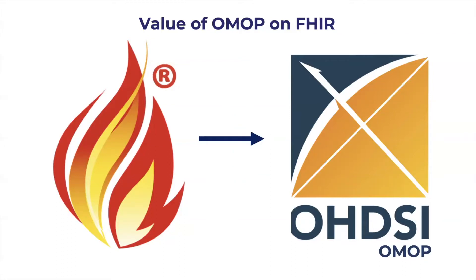Moving data between FHIR and OMOP allows users to translate data from provider and patient applications into structured data repositories. It also allows users to transform individual patient data into a form receptive to scoring by OMOP predictive models. Moving data between OMOP and FHIR allows users to turn a clinical data warehouse into a transactional server capable of interacting with diverse applications — you can call this analytics as a service.